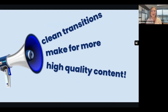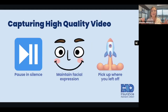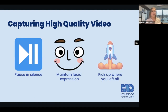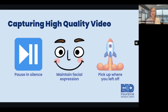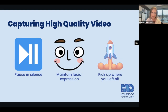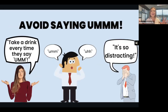Transitions make for more high quality content. If you're in the middle of recording and you have a brain fart — instead of saying 'um' or 'uh,' just pause in silence, maintain your facial expression, and pick up where you left off. It is much easier to edit out small pauses than it is to edit out filler sounds. Avoid saying 'um' — these filler noises are extremely distracting, and unless you want to spend four hours editing them out, just don't do it. Your audience will start turning it into a drinking game.